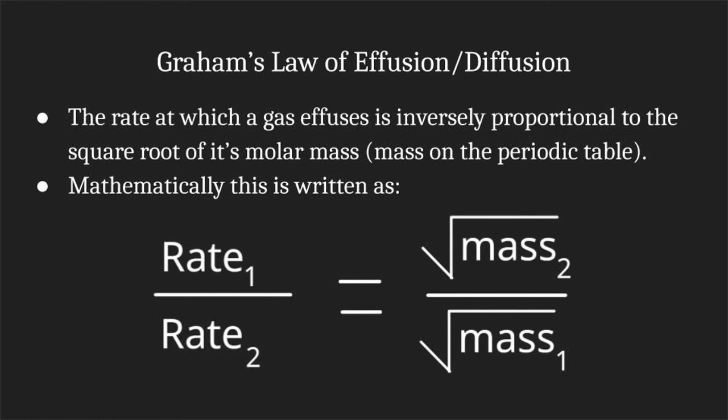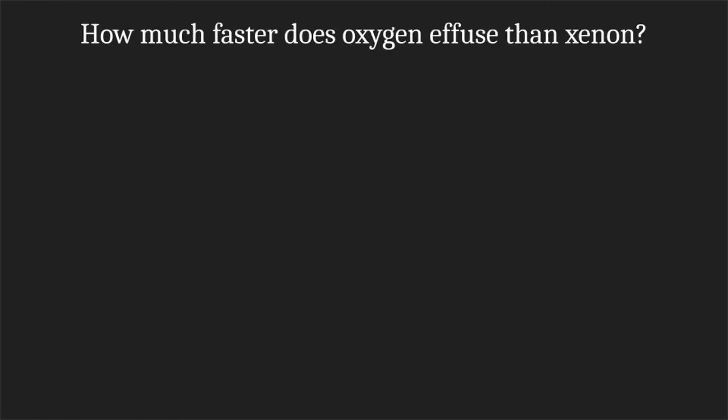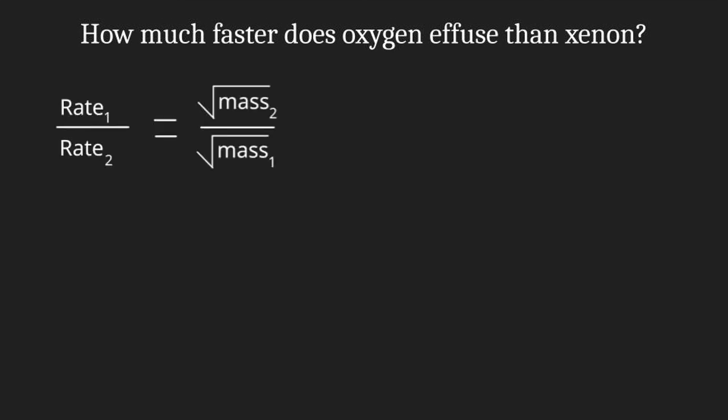For our first question, let's try to figure out how much faster oxygen effuses than xenon. The first thing we're going to do is write our formula. Rate₁ divided by rate₂ equals the square root of mass₂ divided by the square root of mass₁.